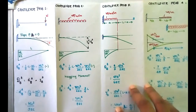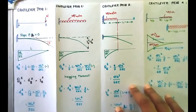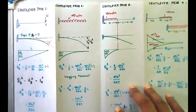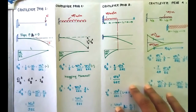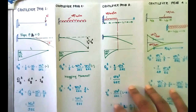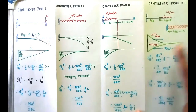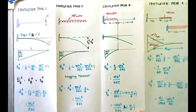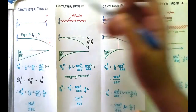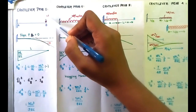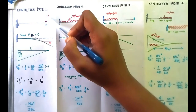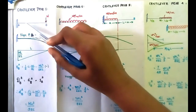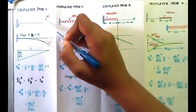We will look at cantilever loading problems using the moment-area method. We have to analyze this problem. The first one involves a point load of W kN applied at the free end of a cantilever.